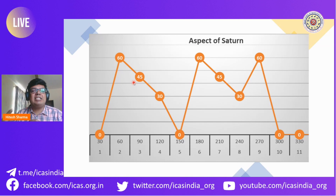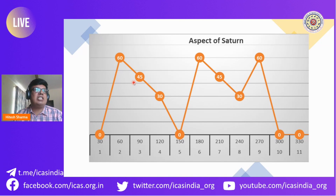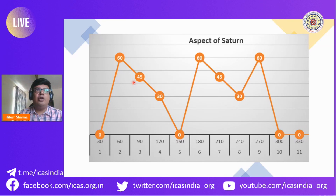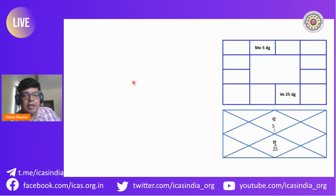We can create formulas which will help us compute the aspectual strength of aspects by these planets, on the basis of where the planets have full aspect, quarter aspect, three-quarter aspect, half aspect, and so on. Any kind of intermediate value can also be found out very easily with these formulas. For those who have been studying or have learned Shadbala formulas, you will already be familiar with these formulas.